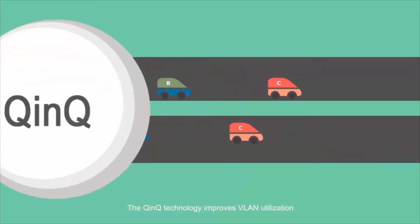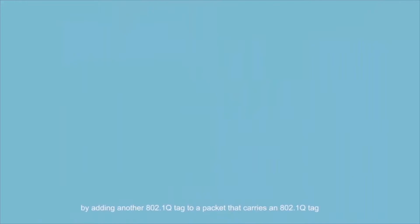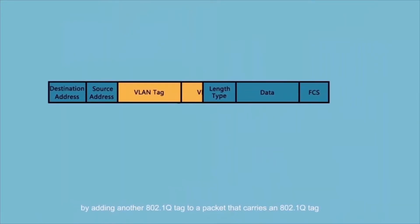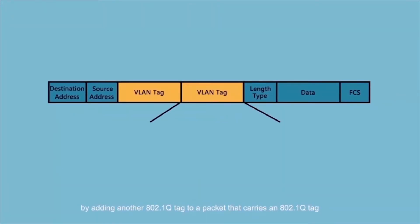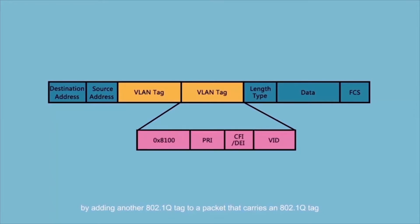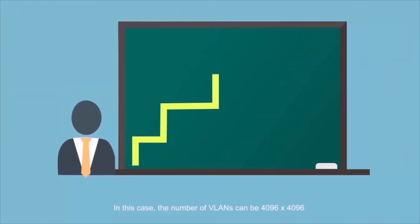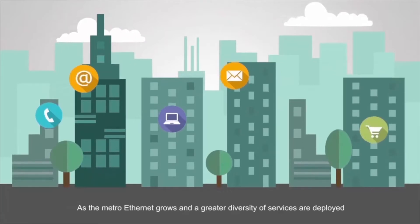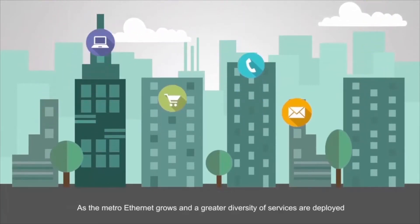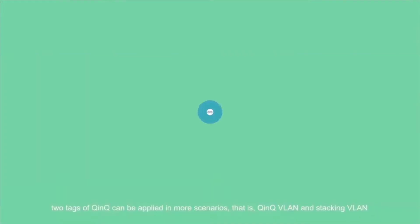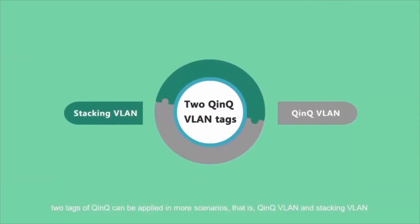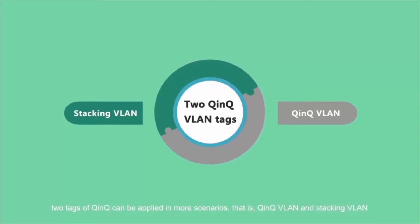The QinQ technology improves VLAN utilization by adding another 802.1Q tag to a packet that already carries an 802.1Q tag. In this case, the number of VLANs can be 4096 by 4096. As the metro Ethernet grows and a greater diversity of services are deployed, two tags of QinQ can be applied in more scenarios — that is, QinQ VLAN and Stacking VLAN.